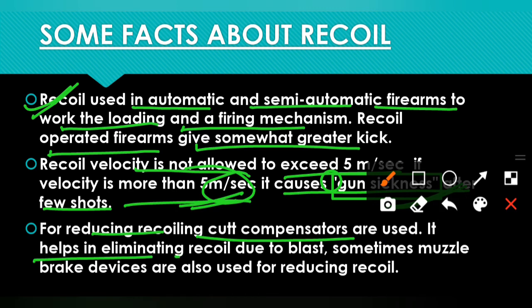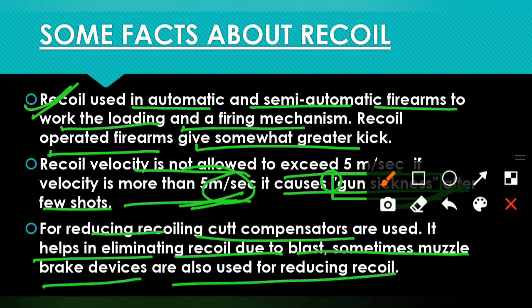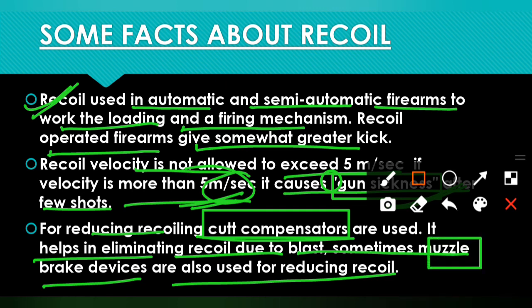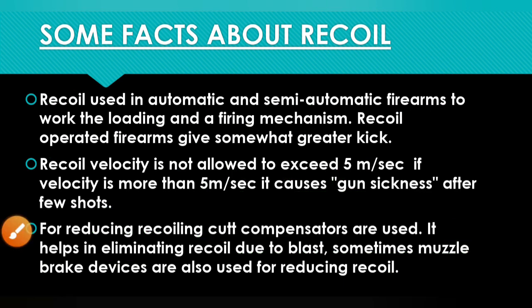It helps in eliminating recoil due to blast. Sometimes muzzle brake devices are also used for reducing recoil. Many times you can use muzzle brake devices to reduce recoil and its role. So these are the important factors related to recoil, and here the theory of recoil is complete.